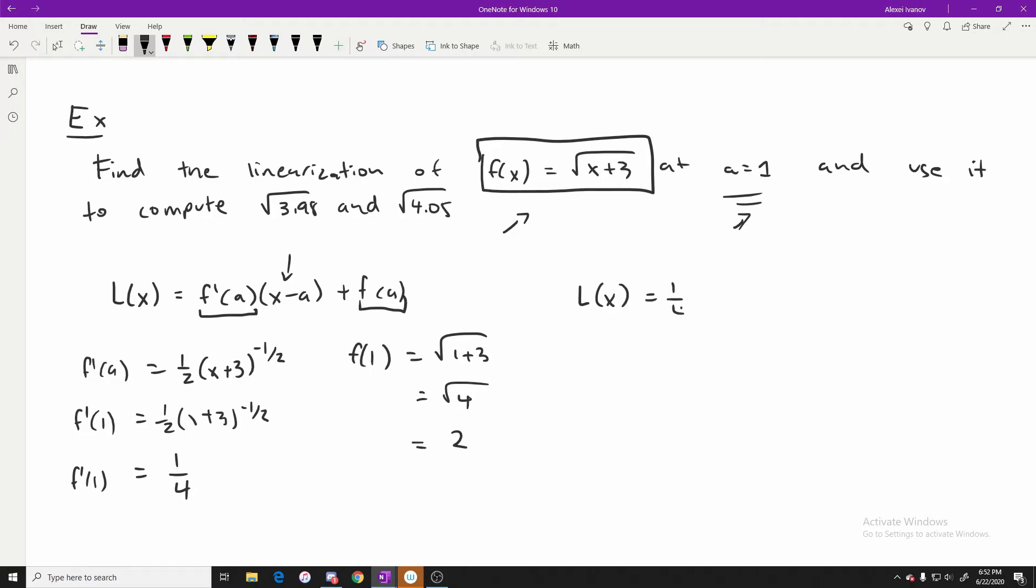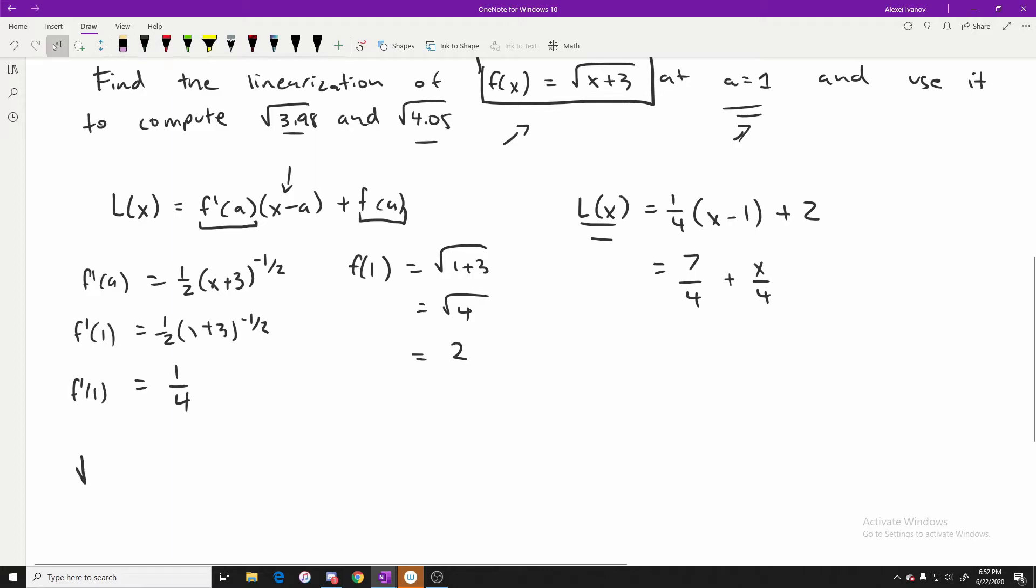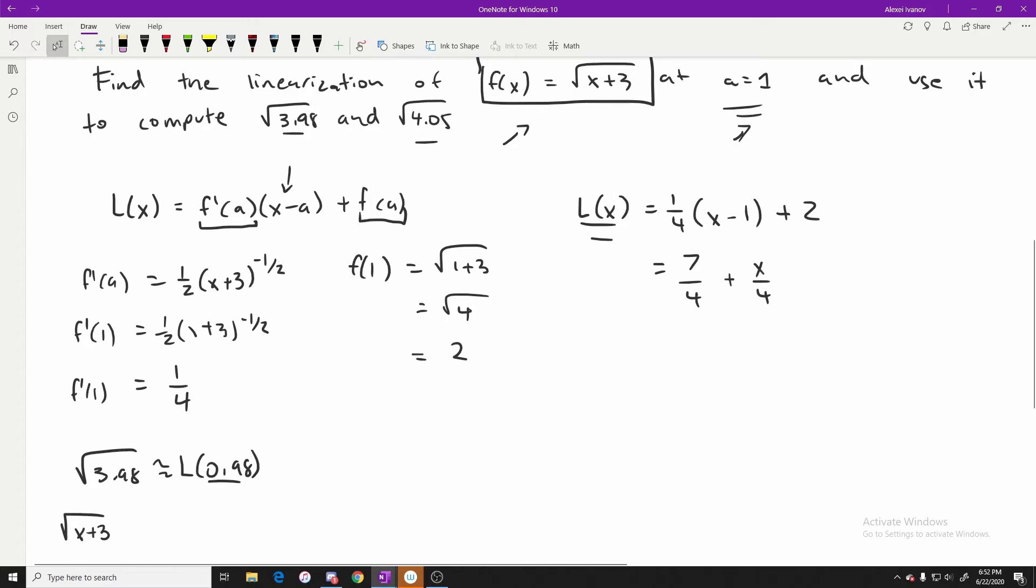So we get L(x) is equal to 1/4 times (x - 1) plus 2. And then if we want to expand this, we'll get 7/4 plus x/4. Now we can use this linearization function right here to compute these estimates. And essentially the square root of 3.98, an estimate of it would roughly be the linearization of 0.98. The reason this is 0.98 and not 3.98 is because if we examine our function, we have the square root of x plus three, right? So in order for us to get this value right here, x plus three to equal to 3.98, right, x must equal to 0.98.